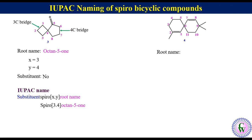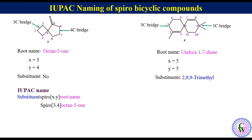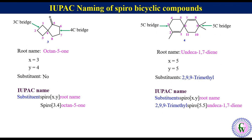Root name: there are 11 carbon atoms in the ring with 2 double bonds at C1 and C7, so the root name will be undeca-1,7-diene. There are two 5-carbon bridges, so x = 5 and y = 5. Substituents: there are 3 methyl substituents — one at C2 and two at C9 — written as 2,9,9-trimethyl. IUPAC name: 2,9,9-trimethylspiro[5.5]undeca-1,7-diene.